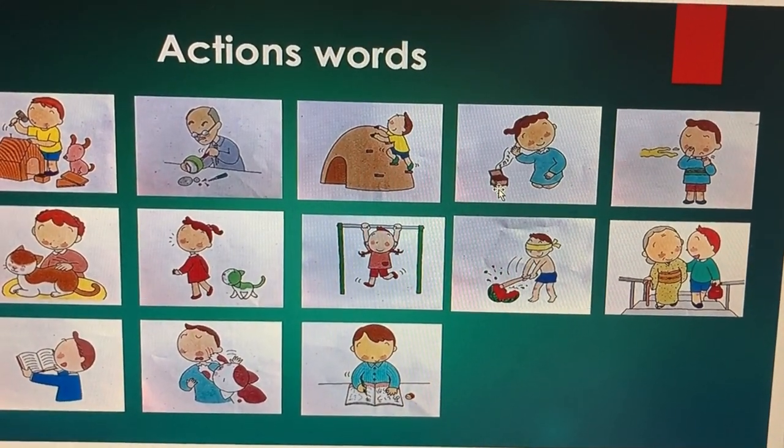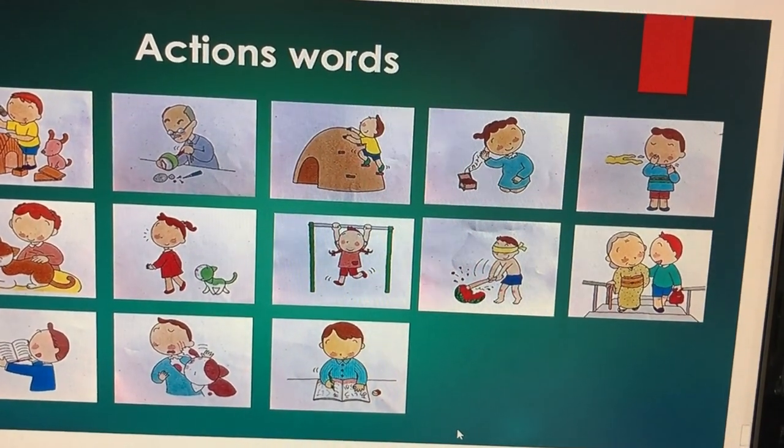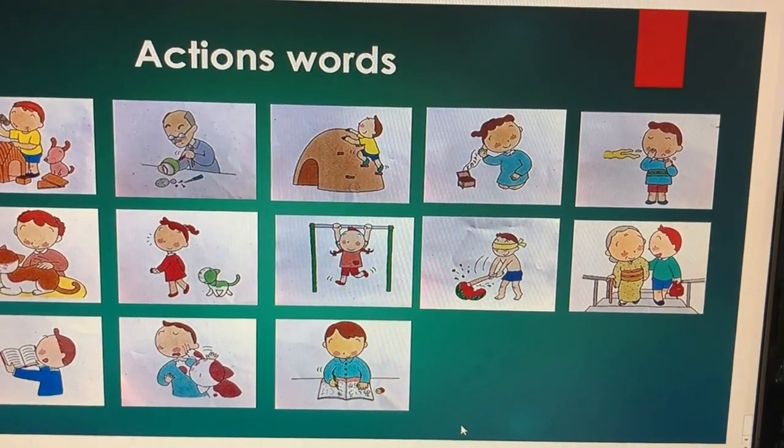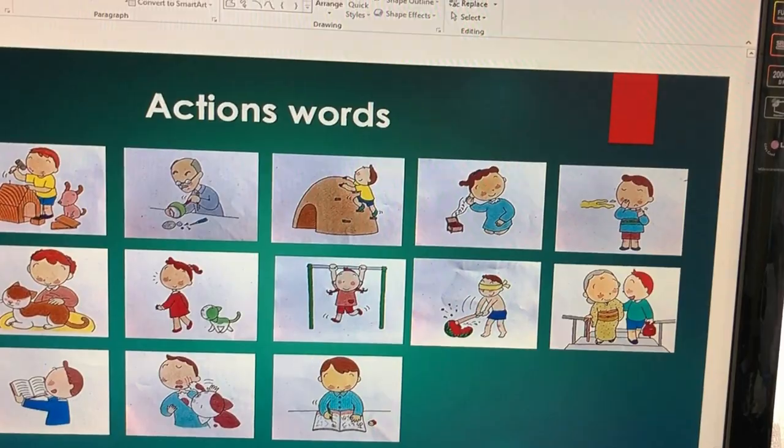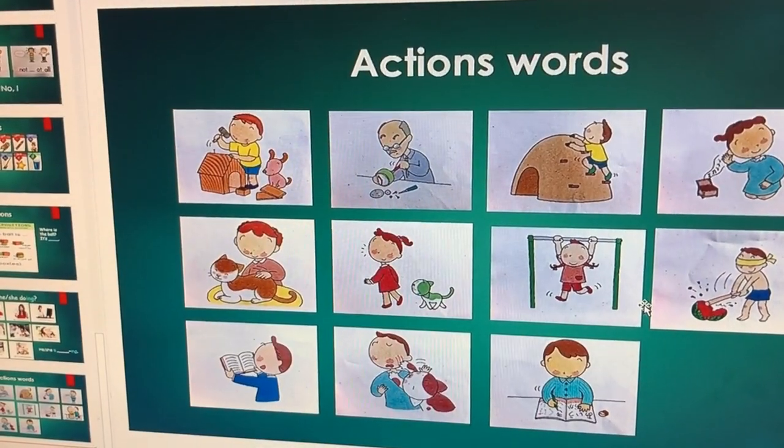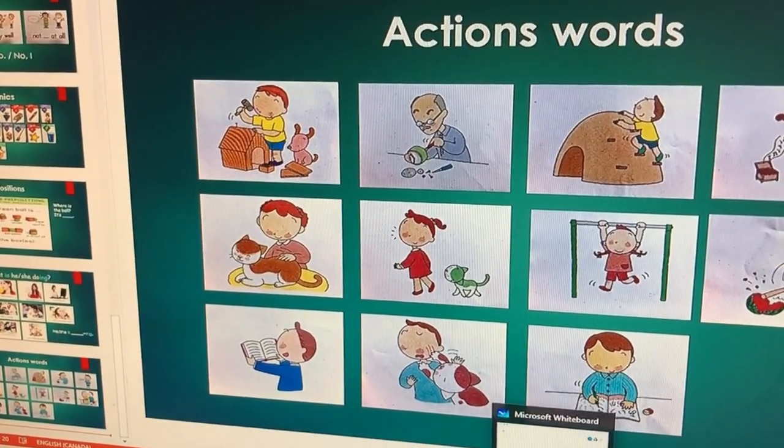And I can ask her randomly, what's this action? Listen. I can ask her to pantomime the action. For example, I say hang, show me hang, can you do hang? And if she doesn't remember it, I can do it for her. So this is my online lesson plan for today.